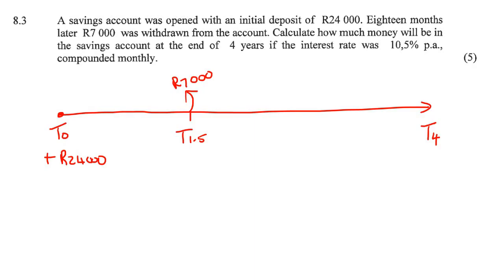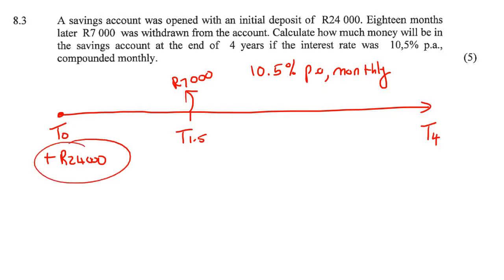And that's it. The interest rate is going to be fixed at 10.5% per annum, compounded monthly. We know how we do these questions — we just look at each amount. So we start with the 24,000.